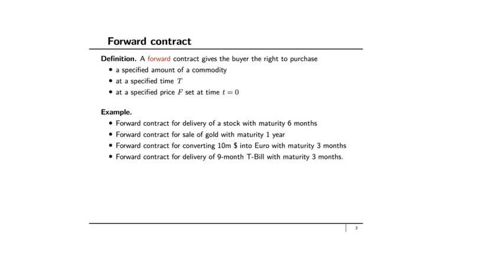A forward contract gives the buyer the right to purchase a specified amount of a commodity at a specified time capital T, at a specified price capital F, which is set at time t=0. At time t=0, you specify a price F, and at time capital T you purchase at that price F. You lock in the price of the commodity or stock at time t=0. Examples include forward contracts for delivery of a stock, sale of gold, converting one currency to another, or buying a T-bill or T-note in the future.